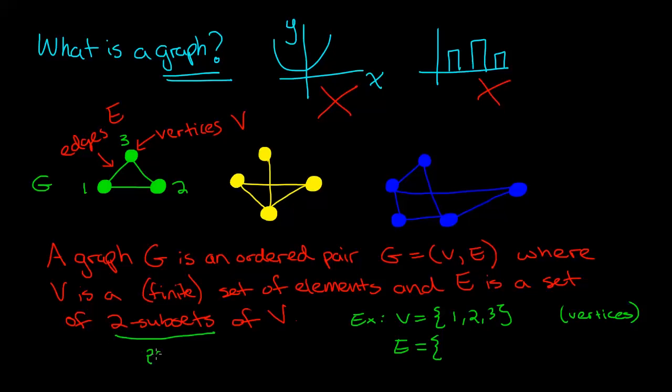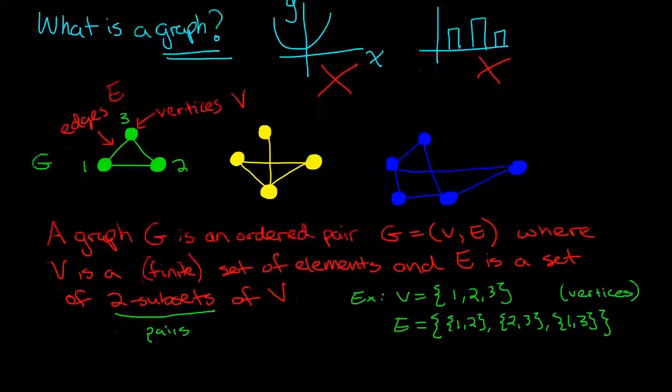So what are my edges? Well I see this edge from one to two. So I write down that edge one to two. And I also see an edge from two to three. And I also see an edge from three to one. And it doesn't matter if I write three one or one three. That's the same thing because we're not putting any direction on these edges.